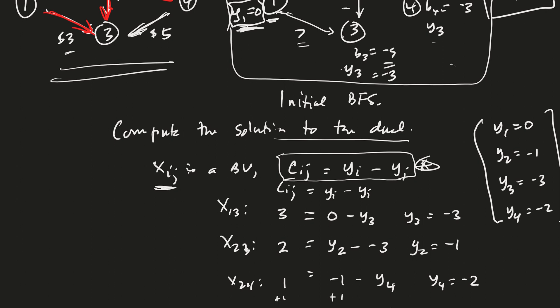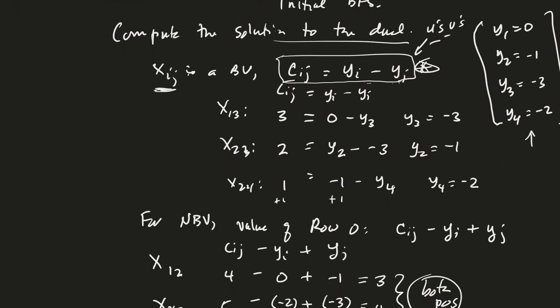Okay, using this formula. Notice that this was the same thing we did in the transportation problem, right? These would be the U's and the V's. These are the U's and the V's from the transportation problem.